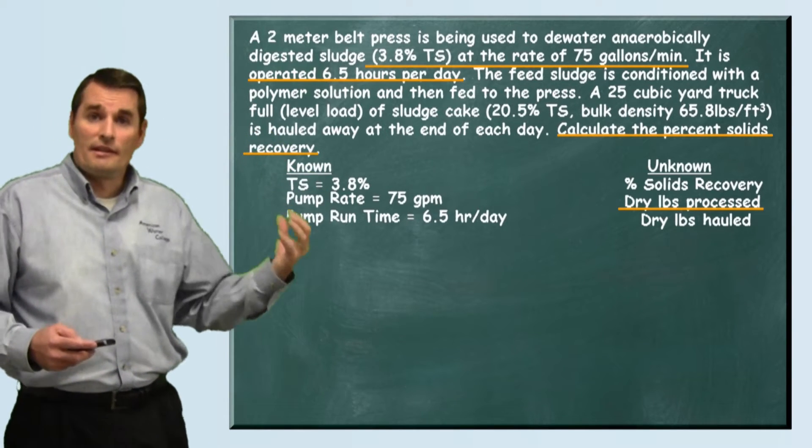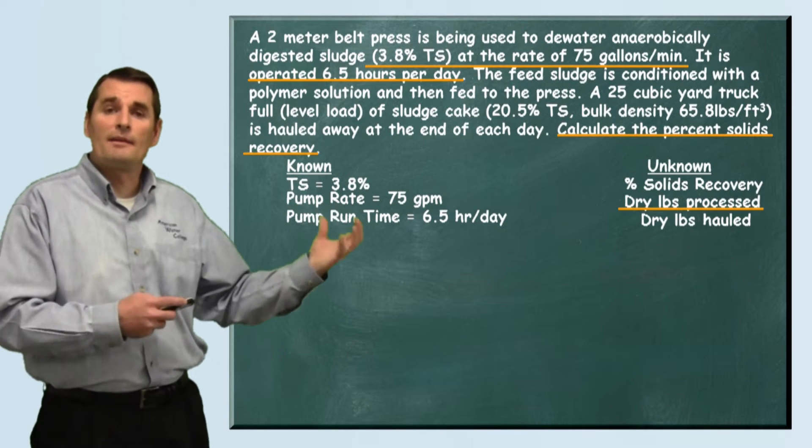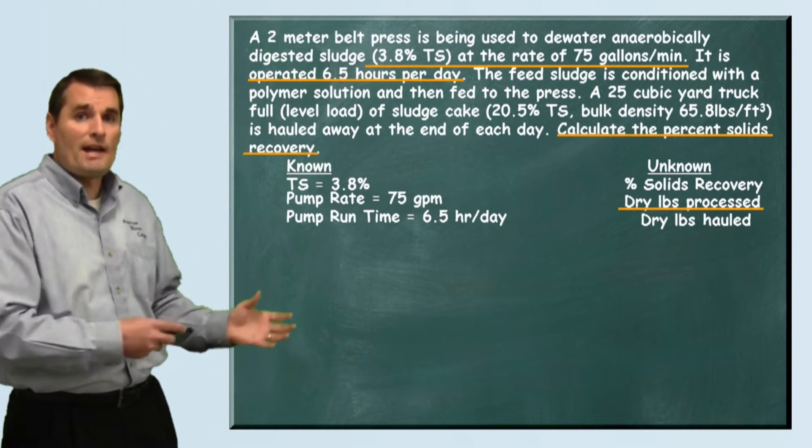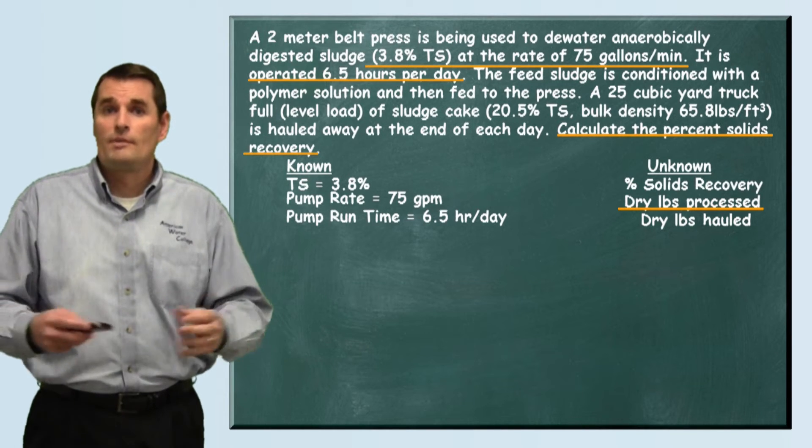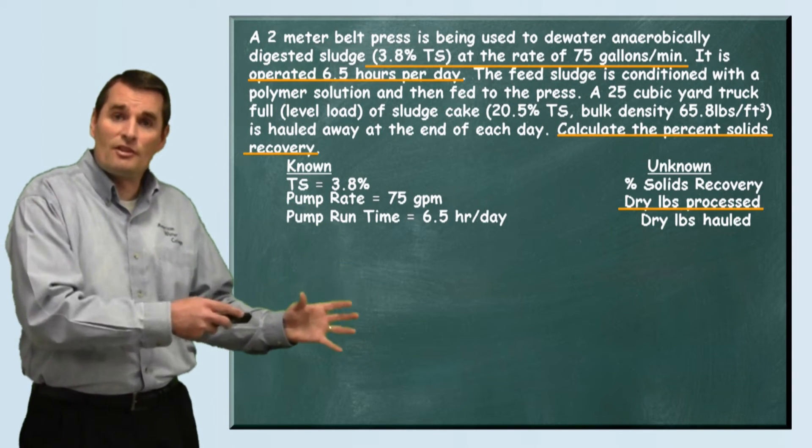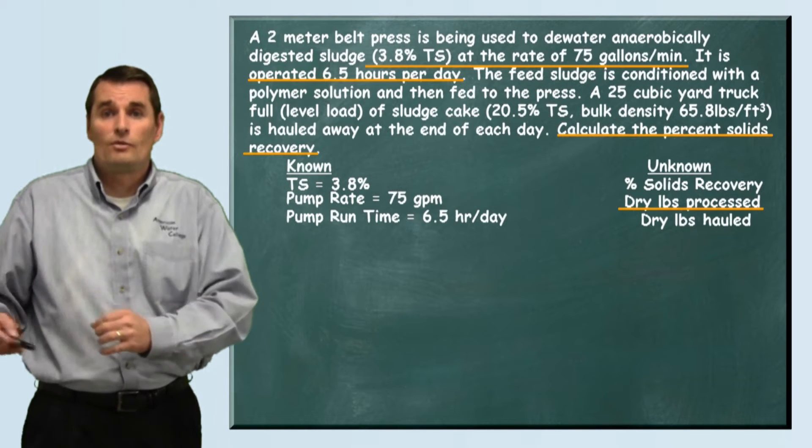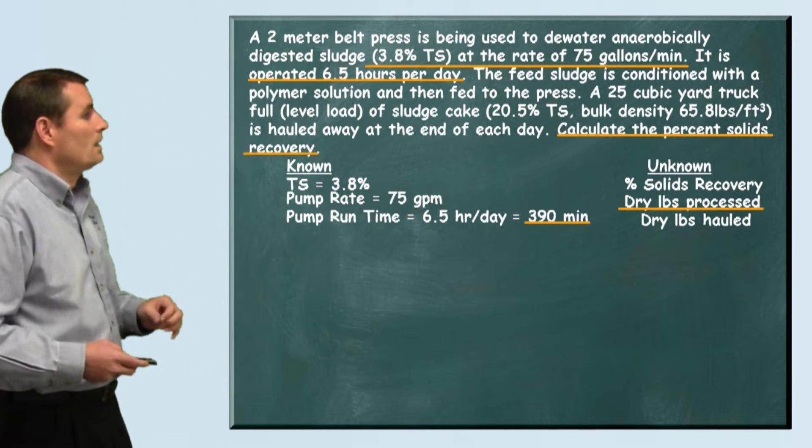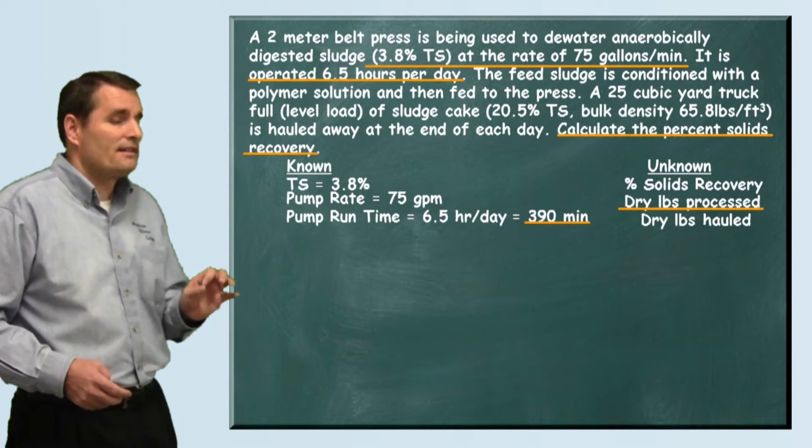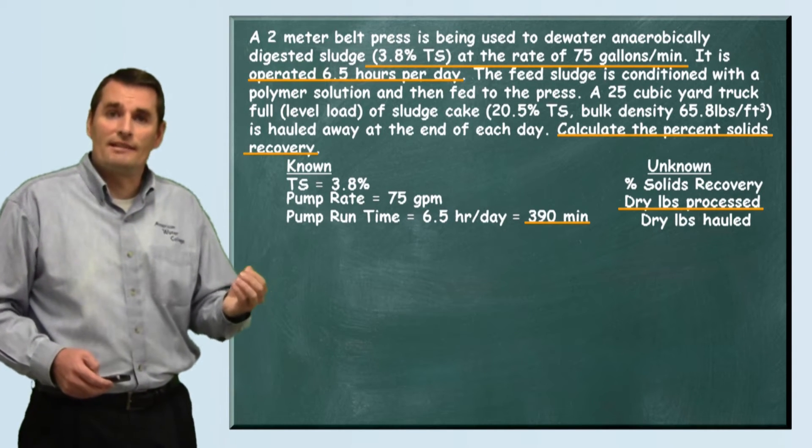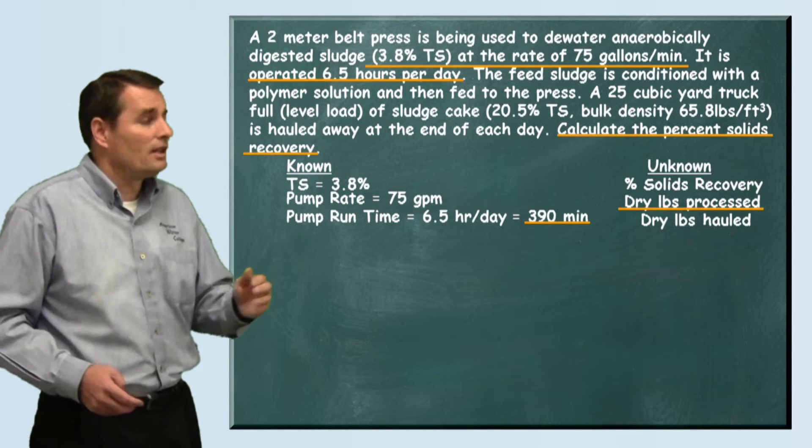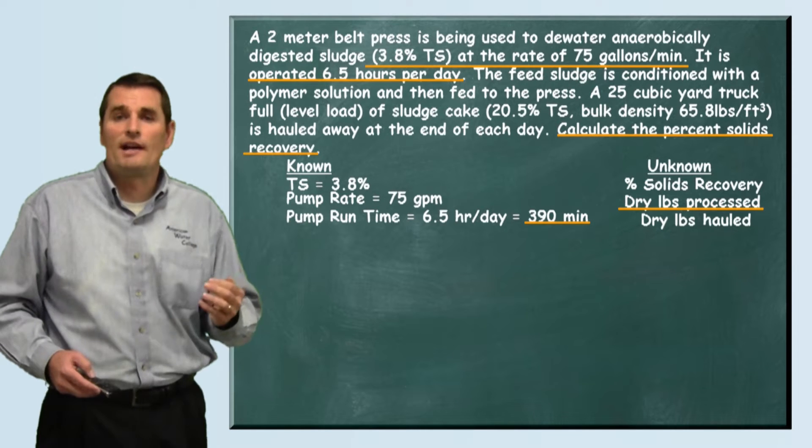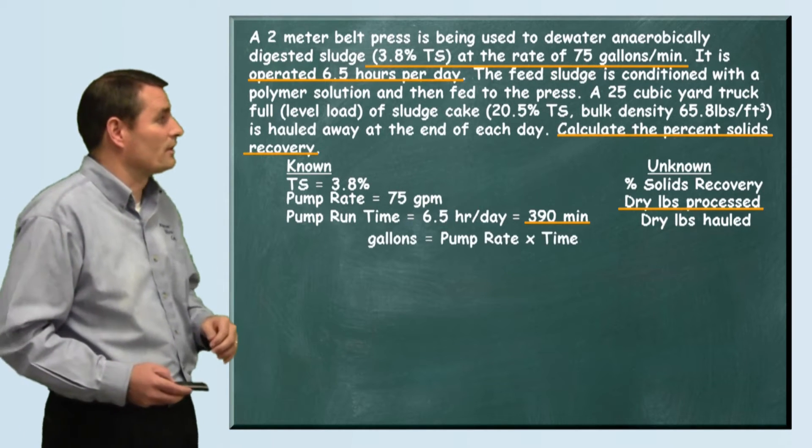Using the number of hours per day times the gallons per minute, we can calculate how many pounds of dry sludge are being processed each day. We converted our 6.5 hours per day to minutes because our pumping rate is in gallons per minute. By multiplying 6.5 by 60, we find that this pump operates for 390 minutes per day.